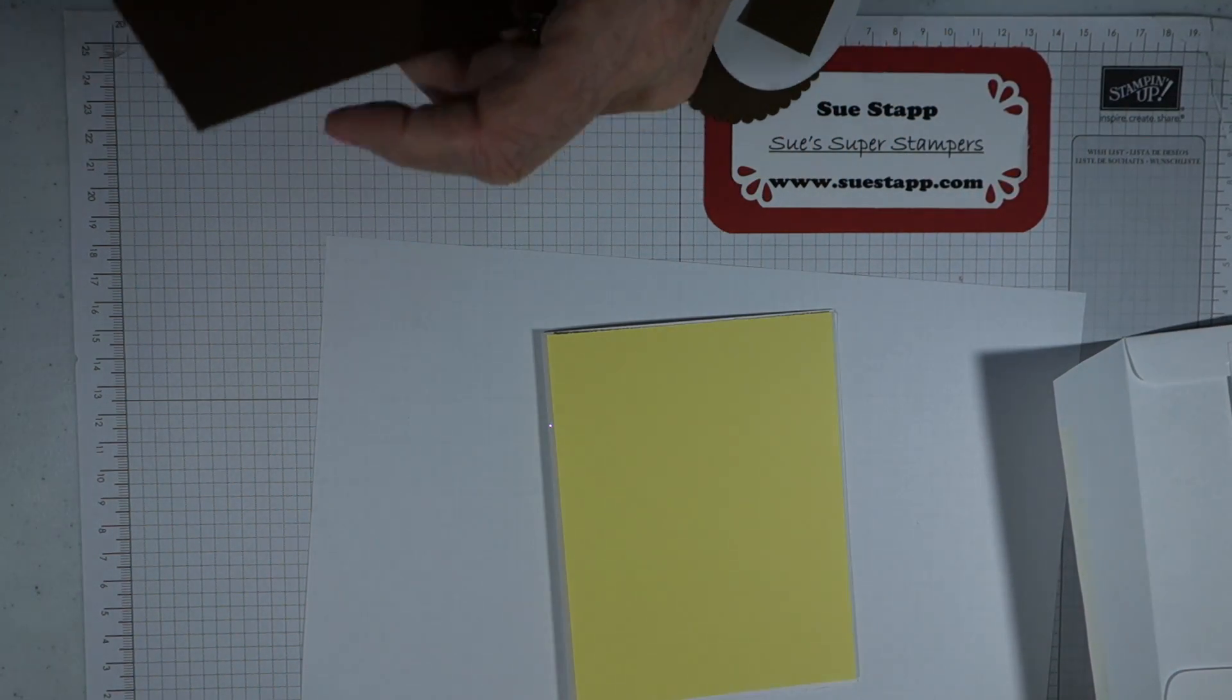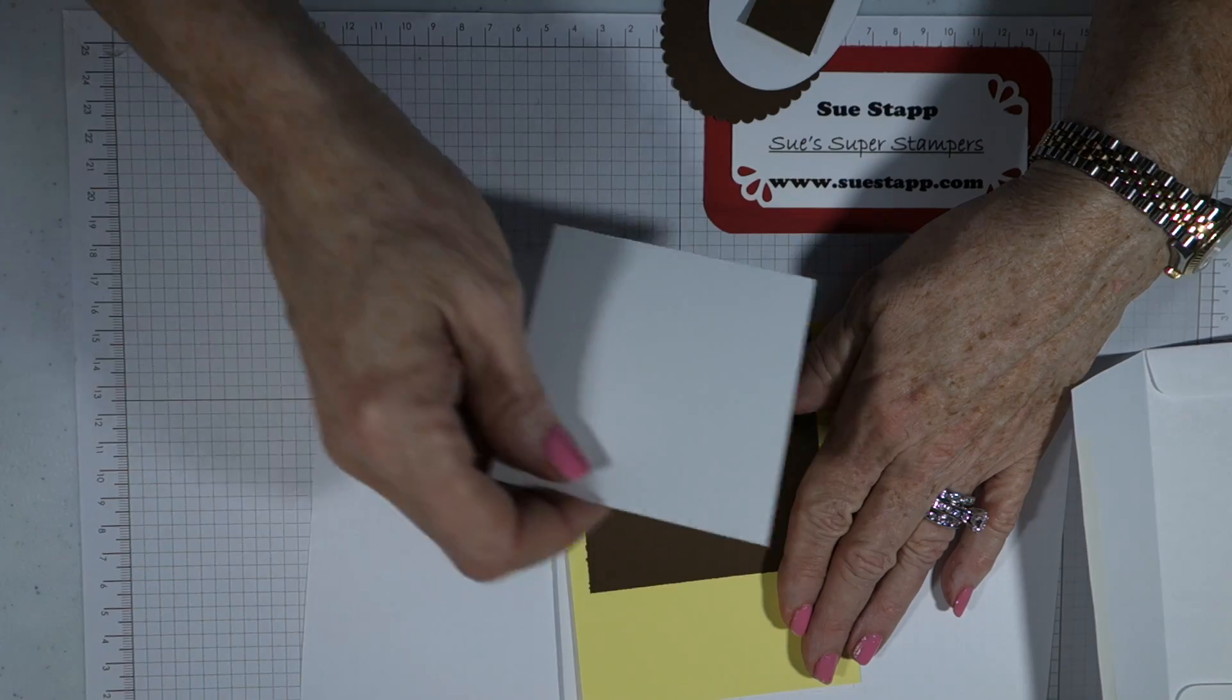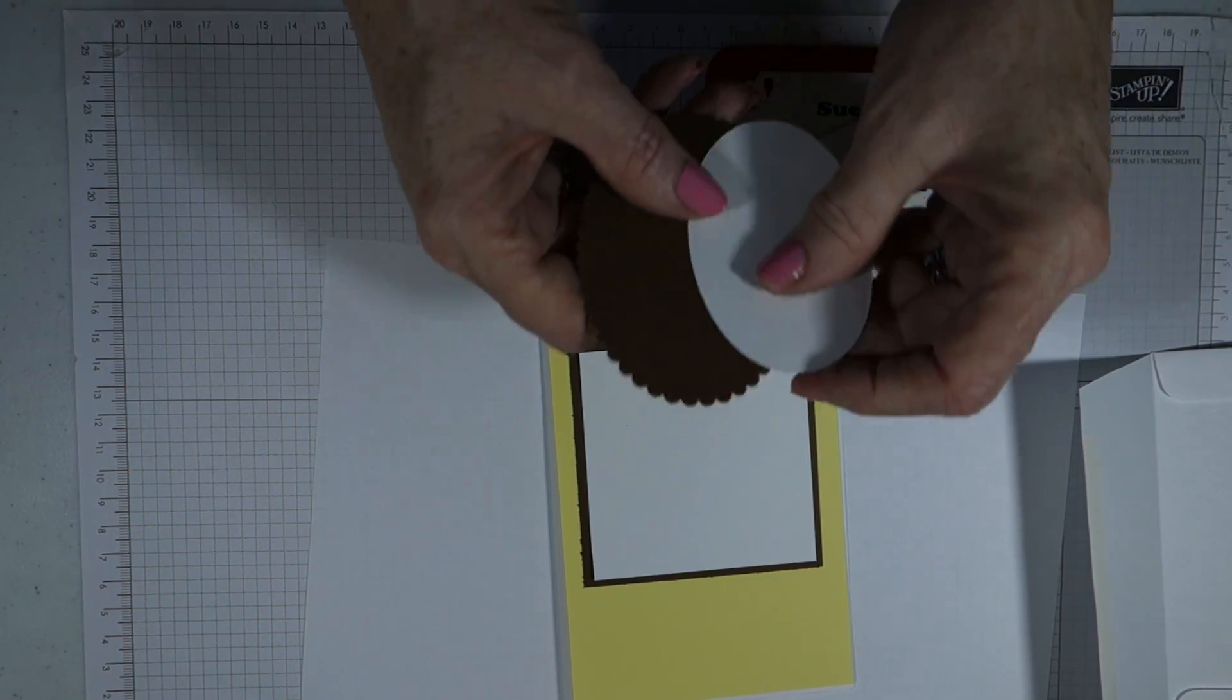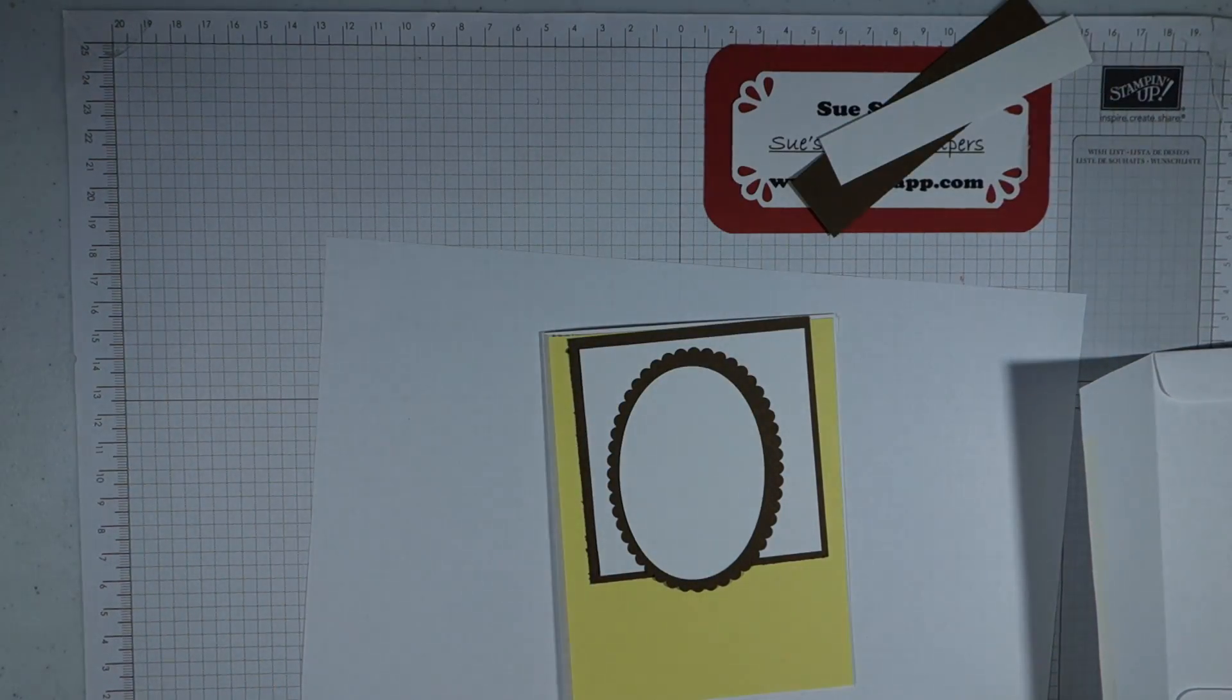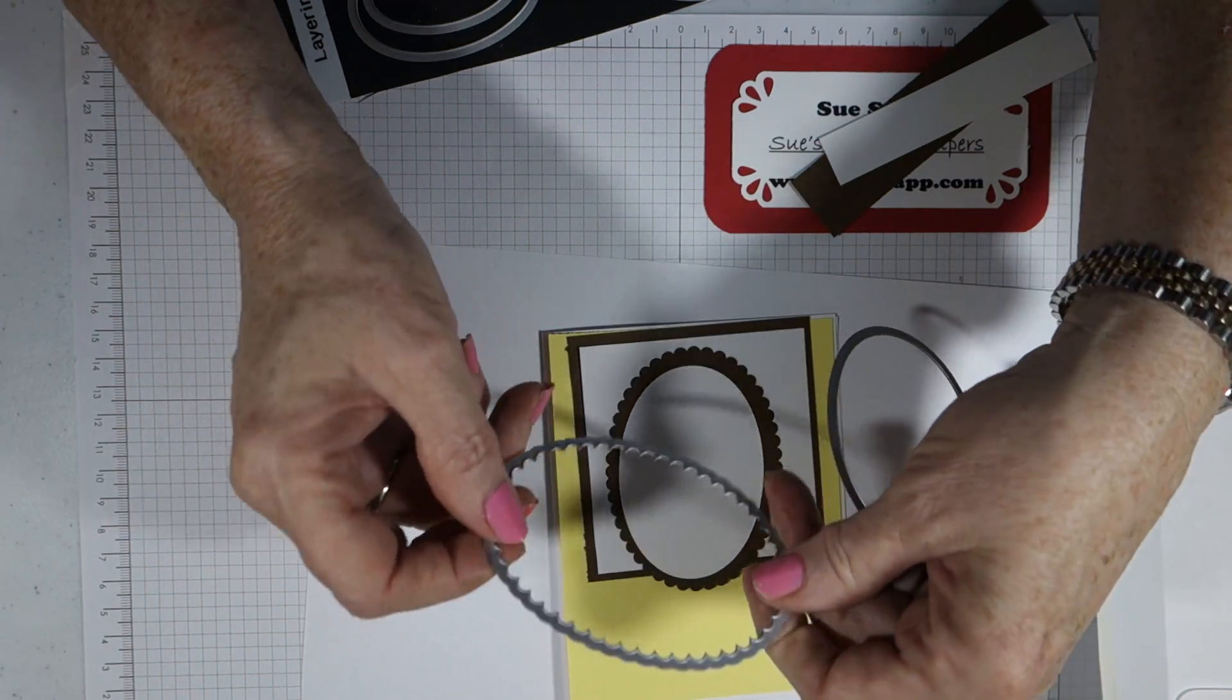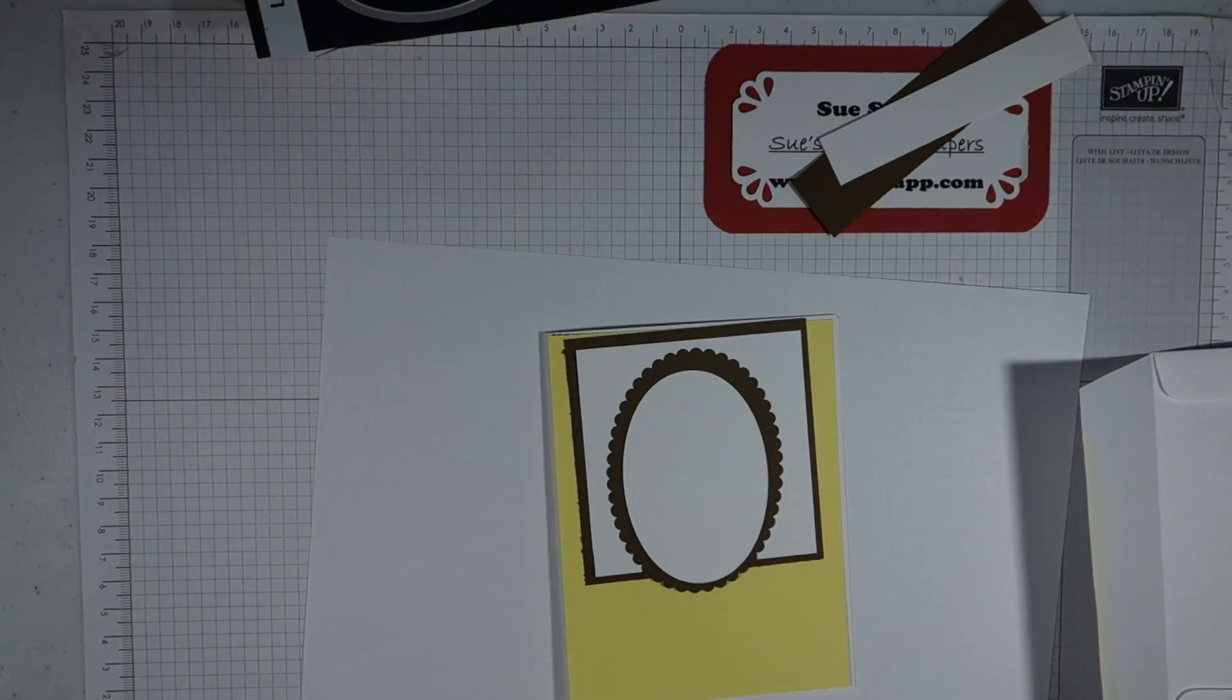And then we have a brown layer that'll go up here towards the top. The brown layer is 3 1⁄2 by 3 1⁄2, and then on top of that we're going to have a white layer that we're going to stamp. The white layer is 3 1⁄4 by 3 1⁄4. So two squares there. And then we have our ovals—a scalloped oval and a solid oval. To get those I used what we call our layering ovals framelit dies.